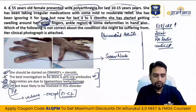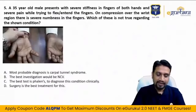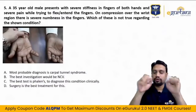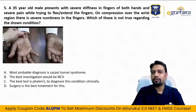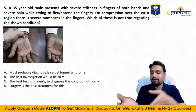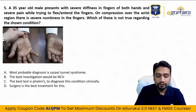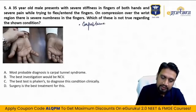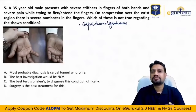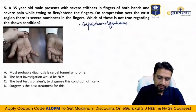Fifth question: a 35-year-old male presents with severe stiffness in fingers of both hands, severe pain while trying to flex or extend the fingers. On compression over the wrist region there is severe numbness in the fingers. When the examiner compresses the wrist, they are compressing the median nerve. Most probable diagnosis: carpal tunnel syndrome. The best investigation is nerve conduction velocity (NCV).